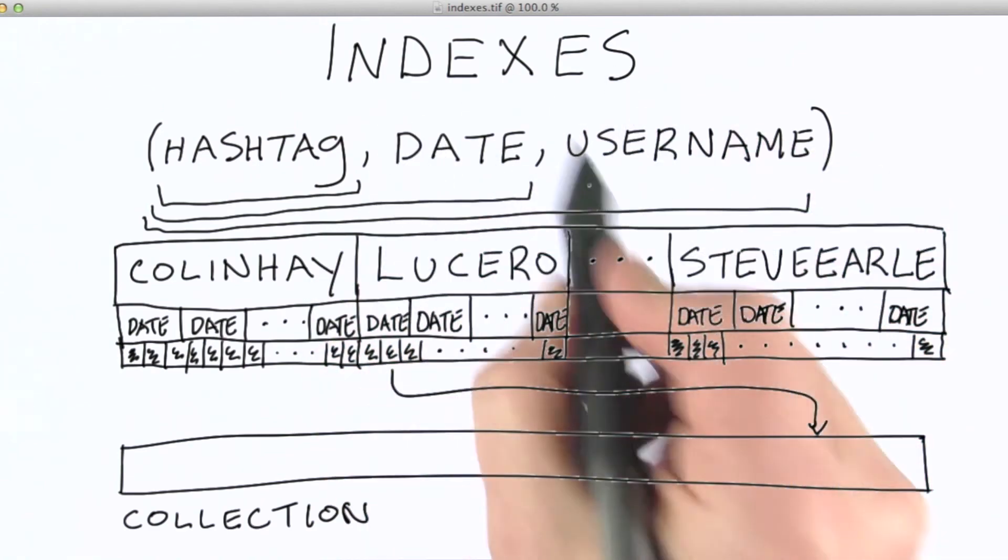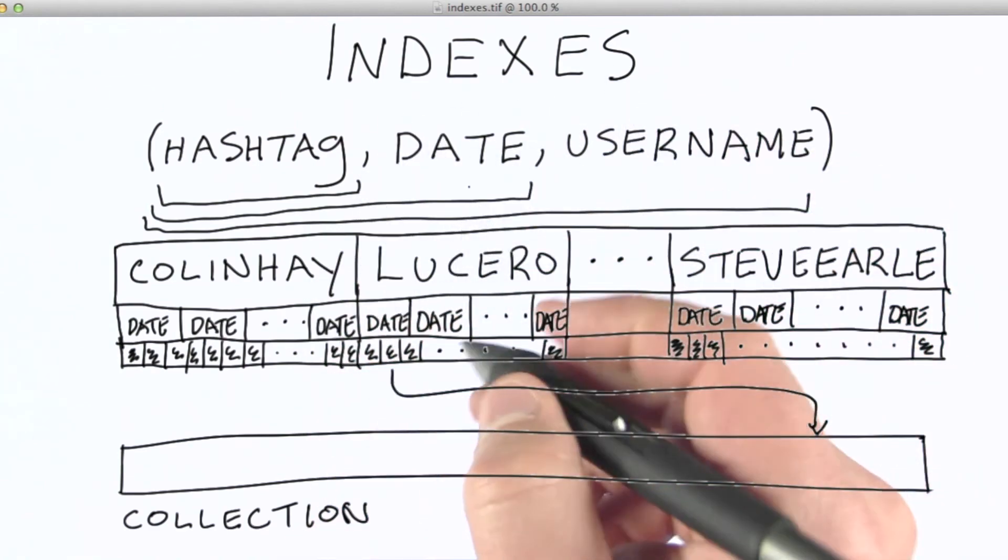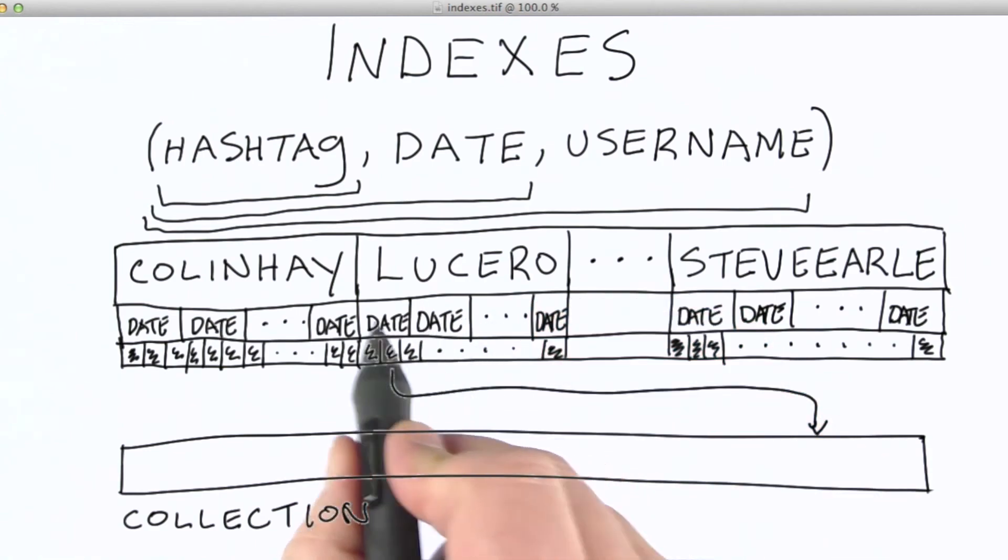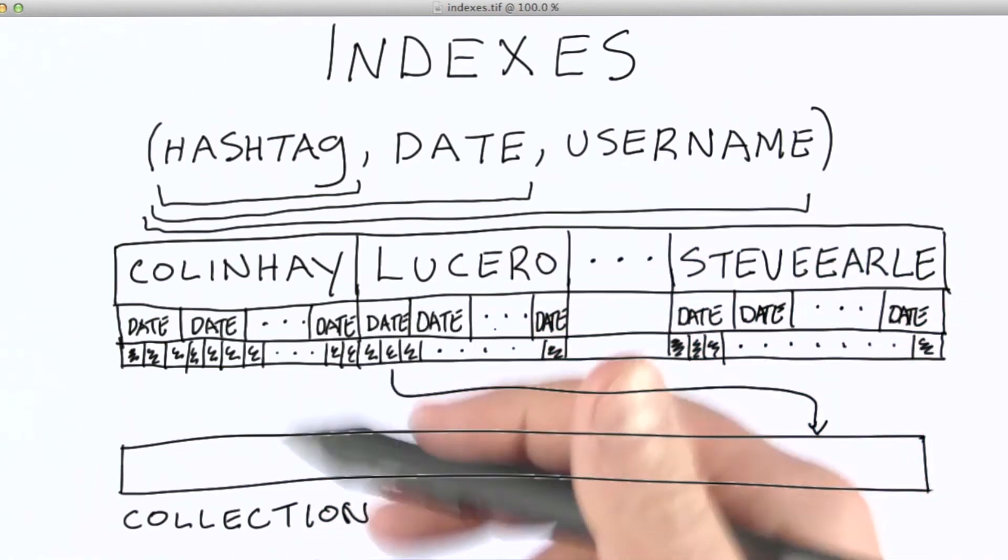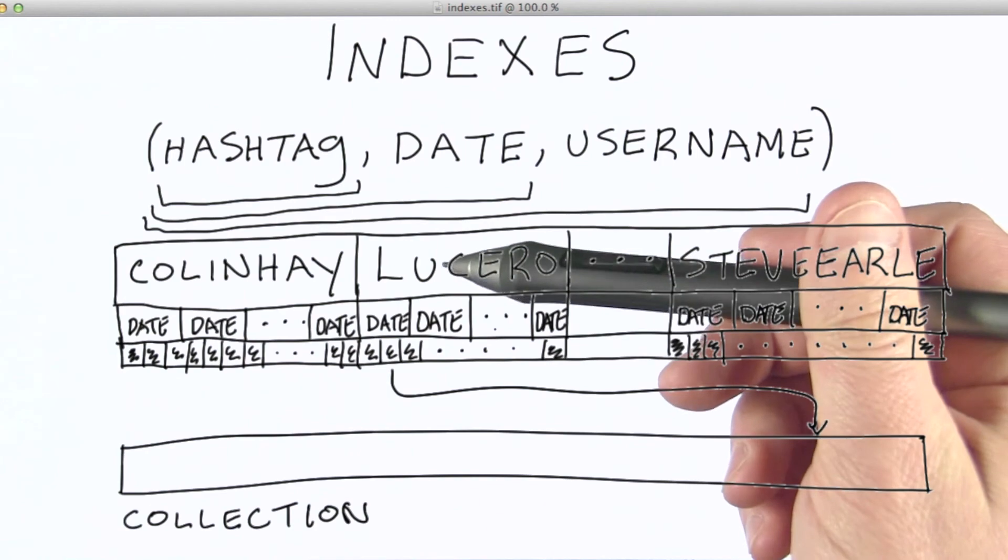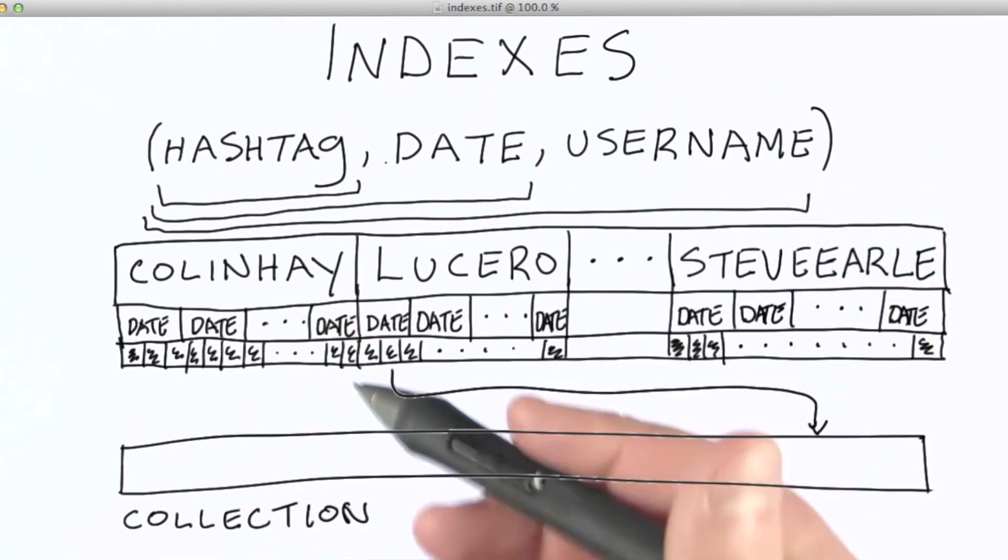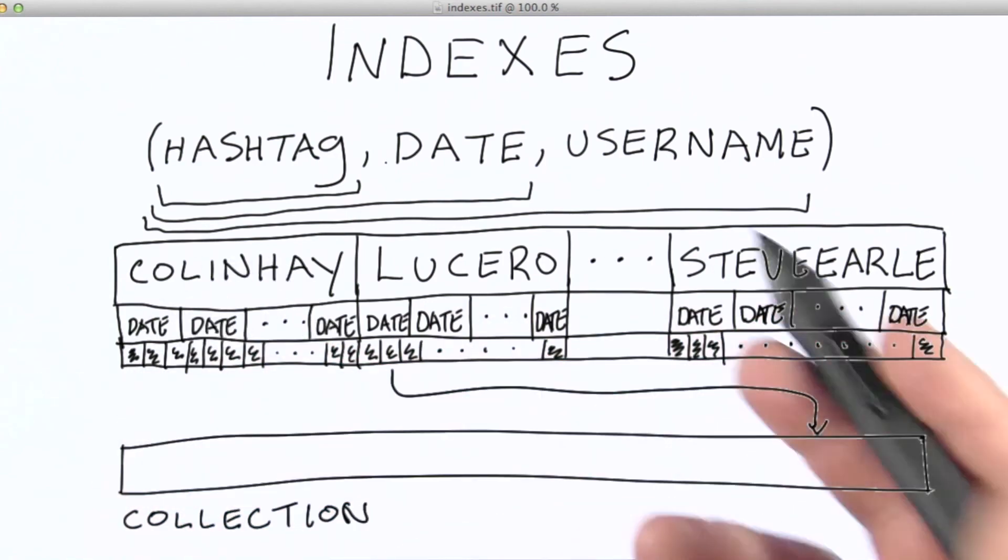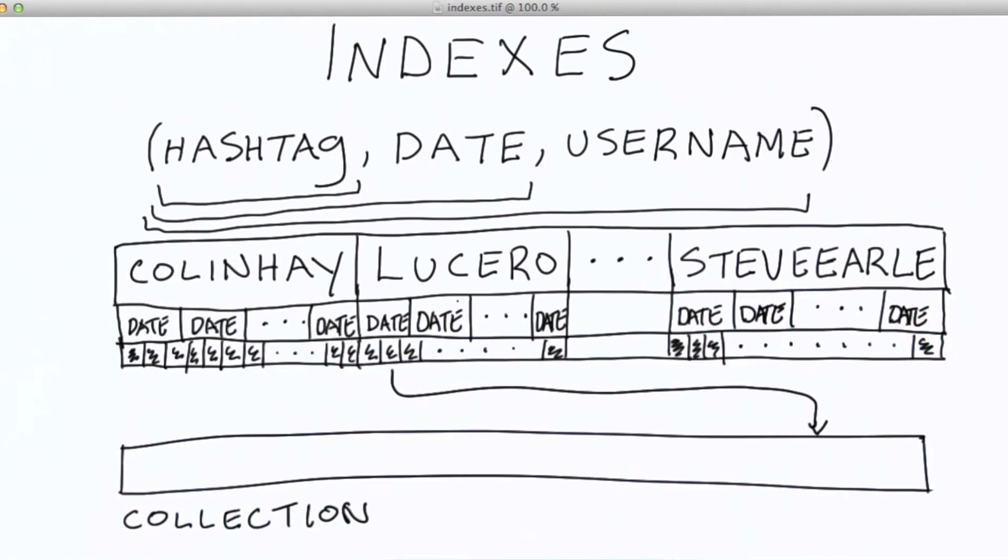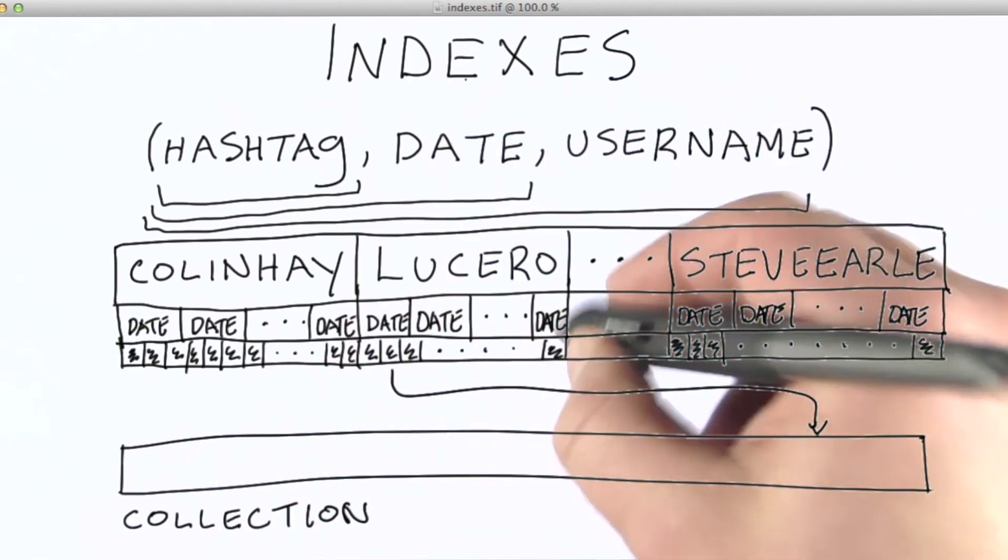So to use an index, I need to start at the top. And this is true whether or not I'm doing a query, or I'm doing an update, or I'm doing a sort, because sorts also will use an index to sort their values. So for instance, if I pull a bunch of data out of the collection and want to sort it by hashtag, with MongoDB, I can use this index to do the sorting.